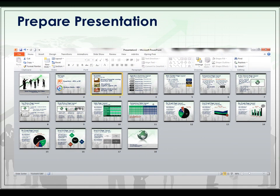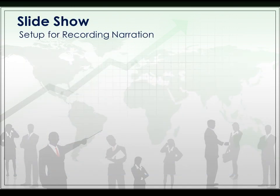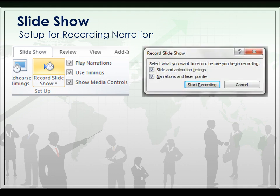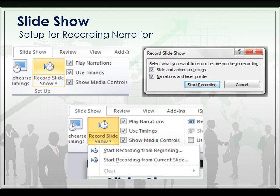The first thing you want to do is to have your slides ready to go and arranged in the order that you're going to be sharing the presentation. Once you have your slides arranged, you can begin your slideshow recording. So we're going to set up for our narration. On the slideshow tab, you can click the Record Slideshow button and simply choose to start recording. This will start recording from the beginning.